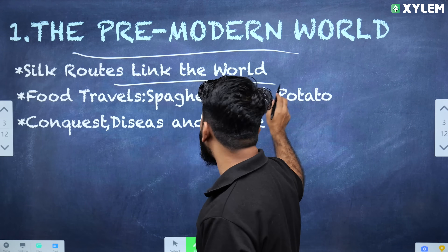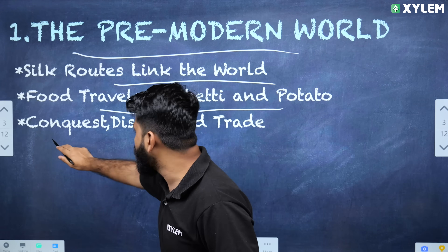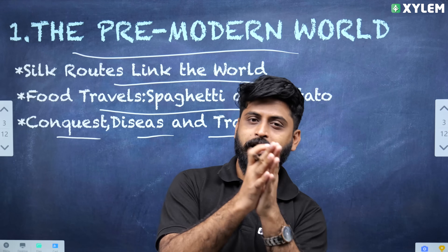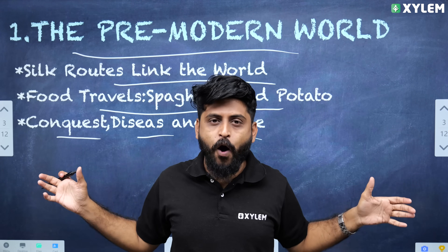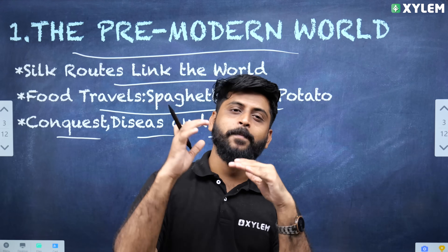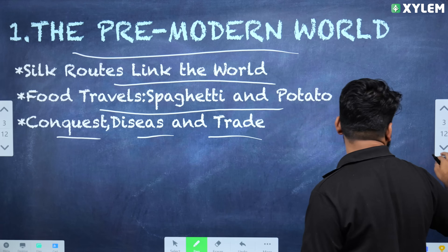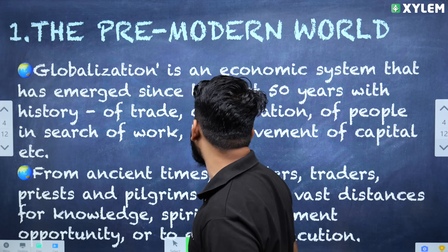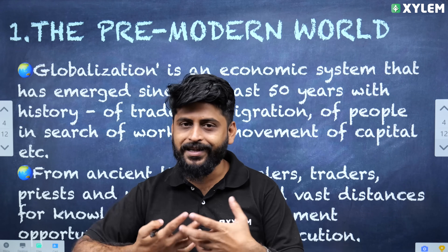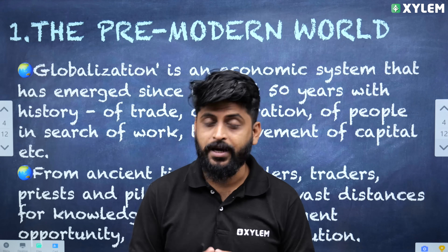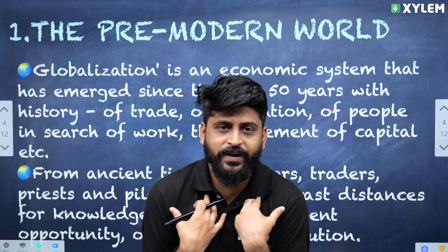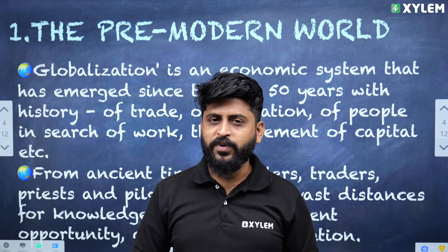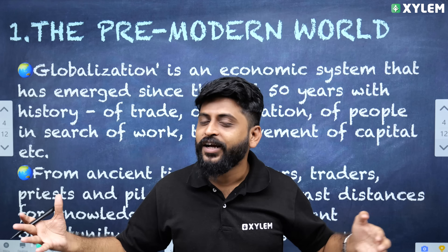There are key points like Silk Routes, Food Travels, Conquest, Disease and Trade. We are going to talk about globalization in this chapter. What is globalization? We are going to discuss globalization.